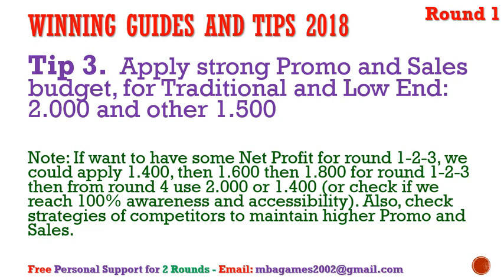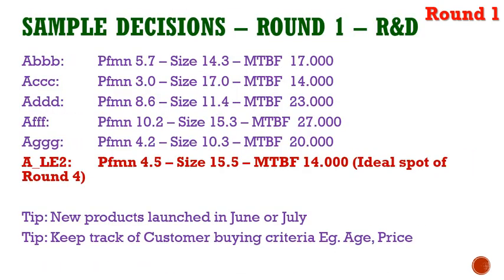You can also take the strategy of checking competitors' spending and setting yours just slightly higher than competitors. You can see the sample decisions for round one on screen, but do not just use these numbers — you need to modify them using your own industry condition report and input that into the Excel file to get more precise numbers for your specific game.